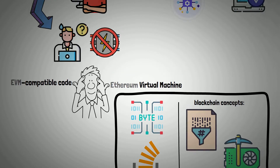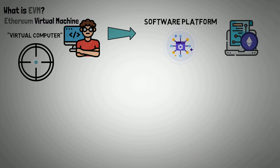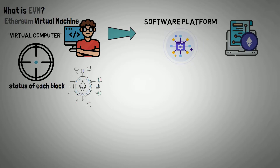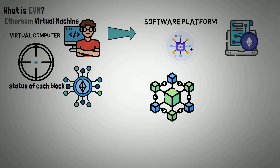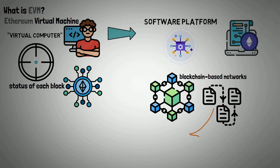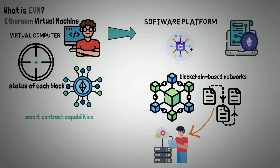The Ethereum virtual machine's target is to determine the status of each block in the Ethereum blockchain. While EVMs and other blockchain-based networks use a distributed ledger to maintain transaction databases, EVMs' smart contract capabilities give them an extra layer of functionality.